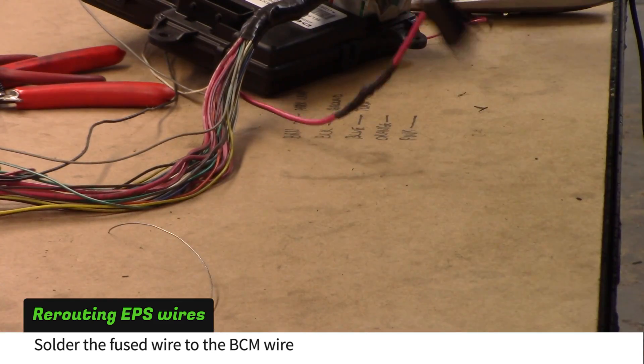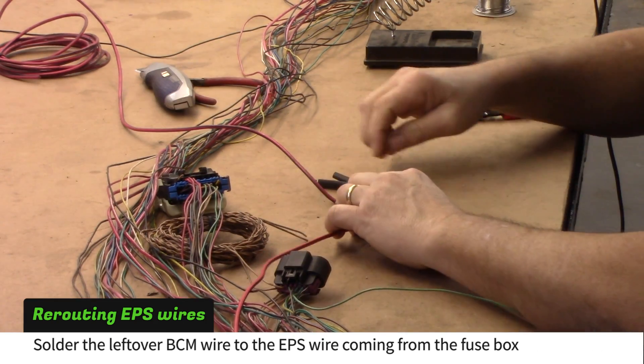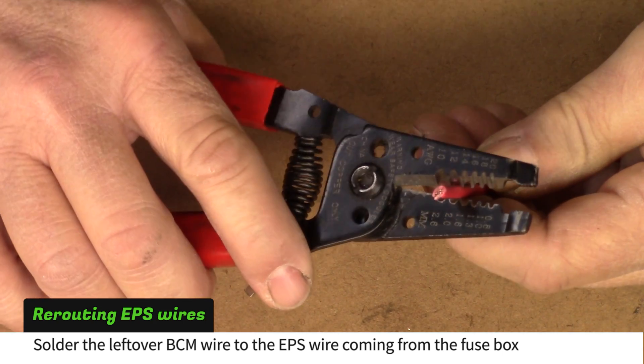Solder the long leftover BCM wire to the power steering wire coming from the fuse box.